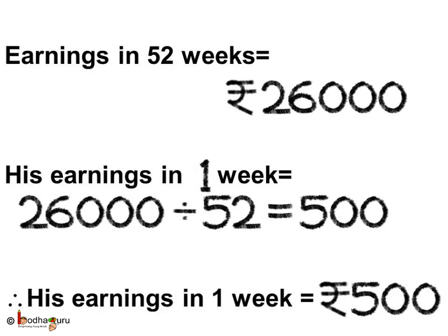Let us see again how we solve this problem. Bhola earned rupees 26,000 in 52 weeks. Now we have to find the amount he earned per week. So his earnings in one week is equal to 26,000 divided by 52, which is equal to 500. Thus, Bhola earned 500 rupees per week.